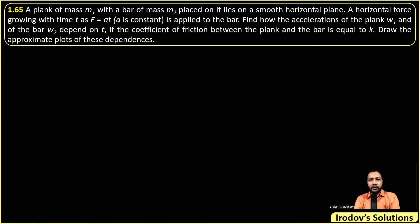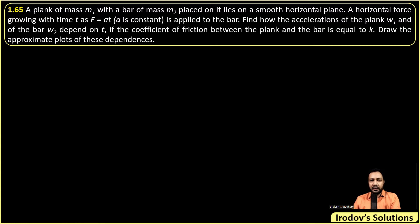Hello dear friends, welcome to the Quantum Guru. I'm going to discuss question number 1.65 of Irodov — a two-block problem from friction. The question states: a plank of mass m1 with a bar of mass m2 placed on it lies on a smooth horizontal plane. A horizontal force growing with time t as F = at (a is a constant) is applied to the bar. Find how the accelerations of the plank w1 and of the bar w2 depend on t, if the coefficient of friction between the plank and the bar is equal to k. Draw the approximate plots of these dependences.